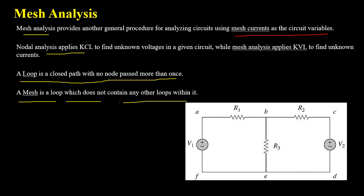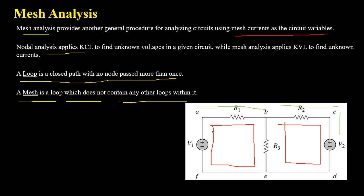For the circuit in the given figure, consider the path starting from node A, then node B, then node E, then node F, ending on node A. Another closed path starts from B, to node C, to node D, to node E, ending on node B. A third outer loop goes from node A through B, C, D, E, F, back to node A. Among these three loops, the outer loop is not independent because it contains two sub-loops; the first and second loops are independent loops or meshes.